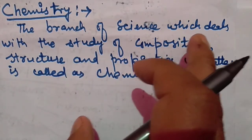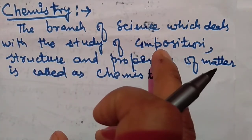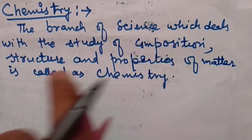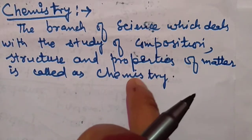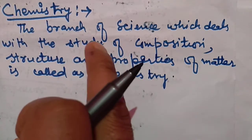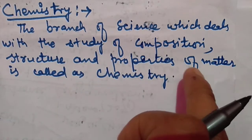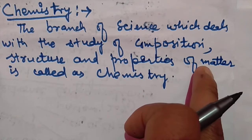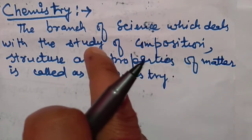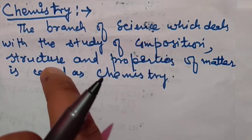The branch of science which deals with the study of composition, structure, and properties of matter is called chemistry. In short, we can say that chemistry is the study of matter.